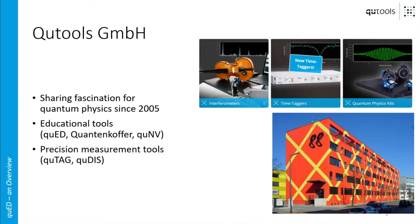As an introduction, let me tell you a little bit about our company, Qtools GmbH. We are a small company situated in southern Germany in Munich, and since 2005 we have been sharing our fascination for quantum physics with you. We began by designing the Q-Add, which is our very first product, designed to help teach quantum physics to students. In that same thought, we developed the Quantum Coffer and then the QNV NV center kit.